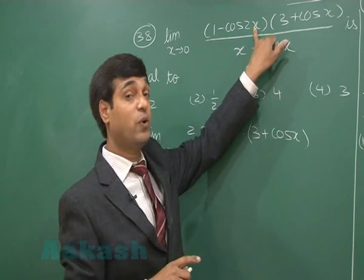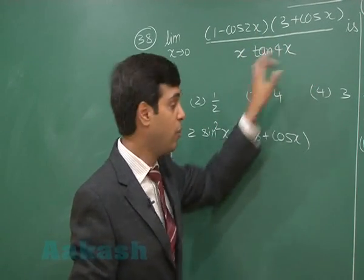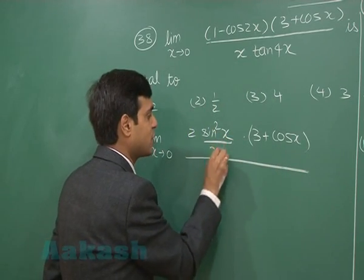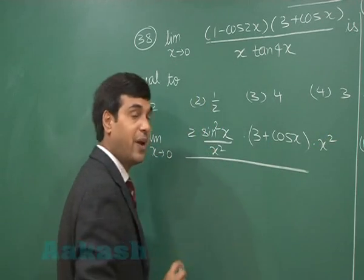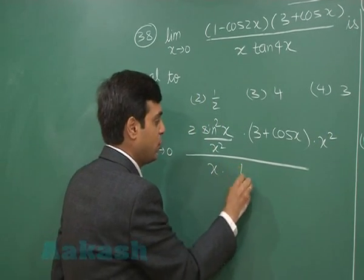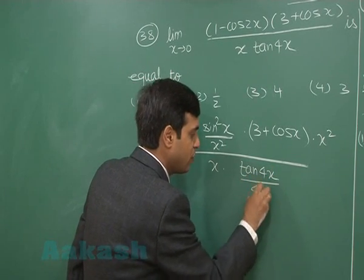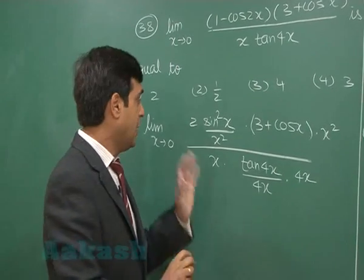1 minus cos 2x was going to become 0, we changed it. This is also going to be 0, we will plan about it. Sin square x needs x square in denominator, so let us multiply and divide by the same term. x into tan 4x needs 4x in denominator, so multiply and divide by the same term.